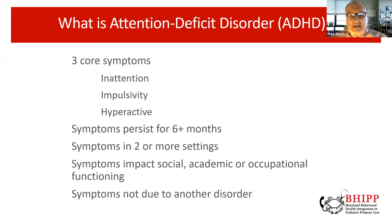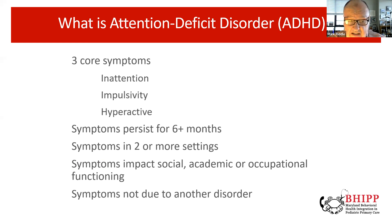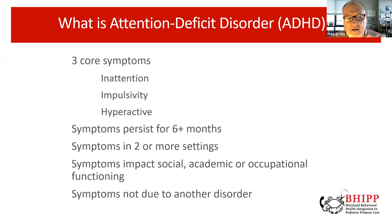What is ADHD? It has three core symptoms: inattention, impulsivity, and hyperactivity. The symptoms need to persist for at least six months and occur in two or more settings — generally home and school. Most importantly, the symptoms have to impact social, academic, or other functioning.